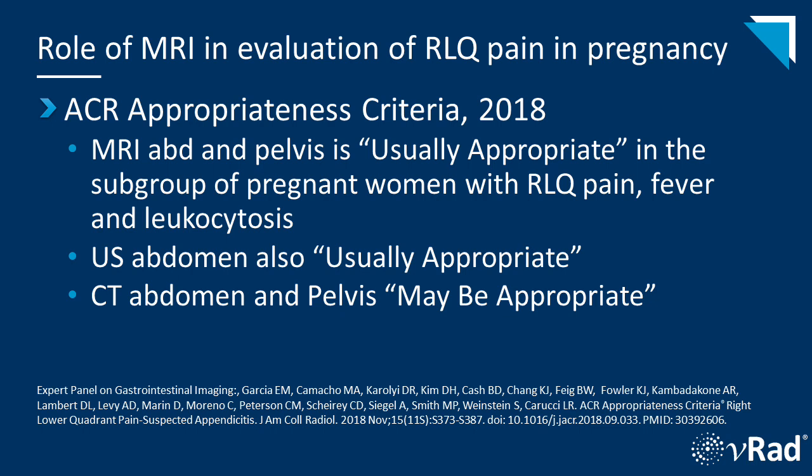The clearest benefit of MRI and ultrasound over CT is the lack of ionizing radiation and the potential risk to the fetus. According to the appropriateness criteria, MRI abdomen and pelvis without IV contrast or ultrasound abdomen is the primary modality for interrogation of the pregnant patient with suspected appendicitis.